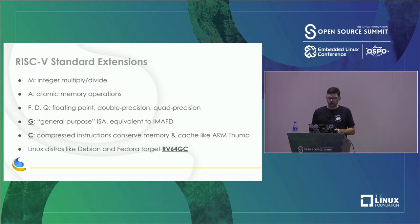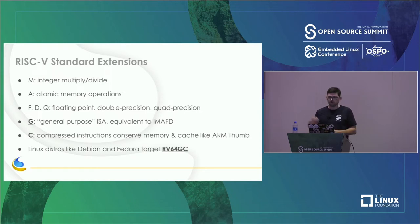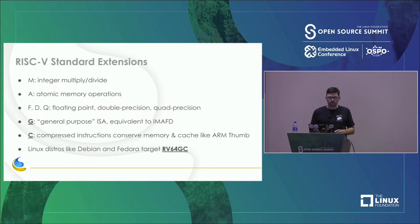We also have C for compressed instructions, similar to ARM Thumb. Linux distros like Debian and Fedora are targeting RV64GC. So if you're looking at a RISC-V core and wondering if it could run Debian or Fedora, you want to look for RV64GC.